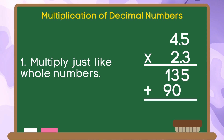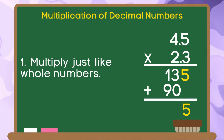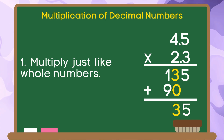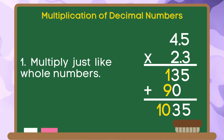Now let us add. Bring down 5. 3 plus 0 is equal to 3. 1 plus 9 is equal to 10.